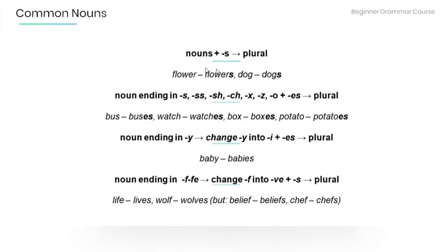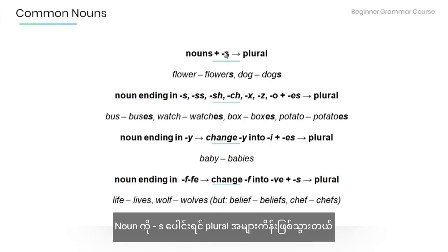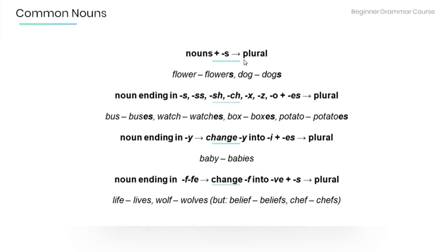When we add S to a noun, it becomes more than one — a plural. For example: flower → flowers, dog → dogs.